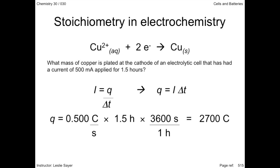So that the units will cancel, I substituted amps for coulombs per second. To convert the one and a half hours into seconds, I use seconds to hours conversion factor. So 2,700 coulombs of charge is sent to the cathode in one and a half hours.